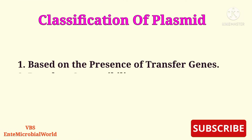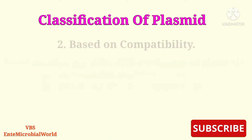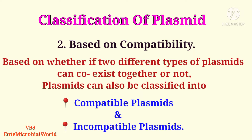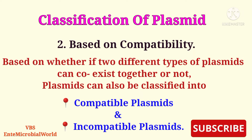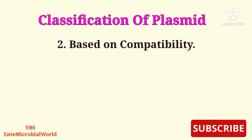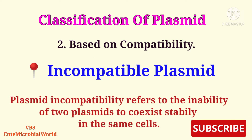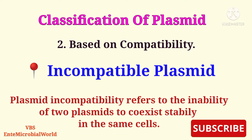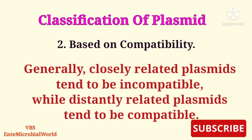Classification of plasmids based on compatibility: based on whether two different types of plasmids can coexist together or not, plasmids can also be classified into compatible and incompatible plasmids. Plasmid incompatibility refers to the inability of two plasmids to co-exist stably in the same cell. Generally, closely related plasmids tend to be incompatible while distantly related plasmids tend to be compatible.